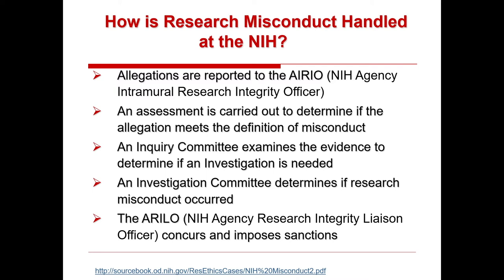So what happens at the NIH intramural program when misconduct is found or when it is possible that misconduct has occurred? Any allegations are reported immediately to the RIEO — the NIH Agency Intramural Research Integrity Officer. An assessment is carried out to determine if the allegation meets the definition of misconduct. An inquiry committee examines the evidence to determine if an investigation is needed. If so, an investigation committee will determine if scientific misconduct has occurred, and the ARLO — the Agency Research Integrity Liaison Officer — may concur and would be the one to impose any sanctions.